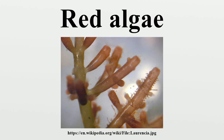Fossil record. One of the oldest fossils identified as a red alga is also the oldest fossil eukaryote that belongs to a specific modern taxon. Bangiomorpha pubescens, a multicellular fossil from Arctic Canada,